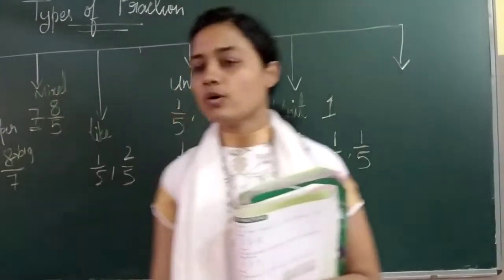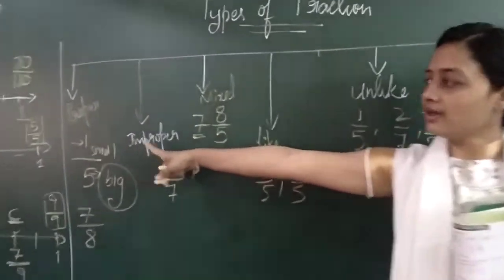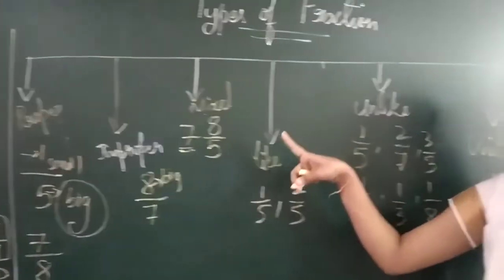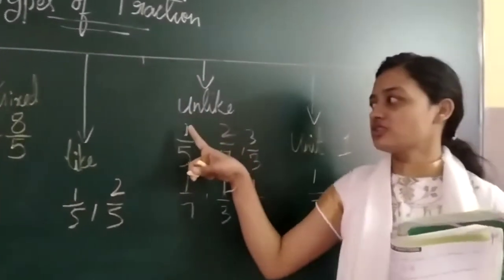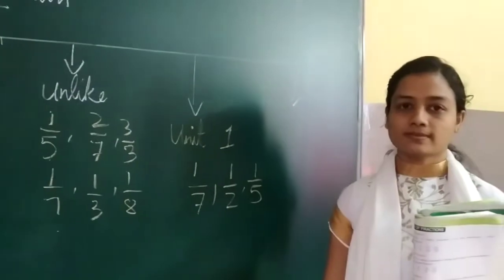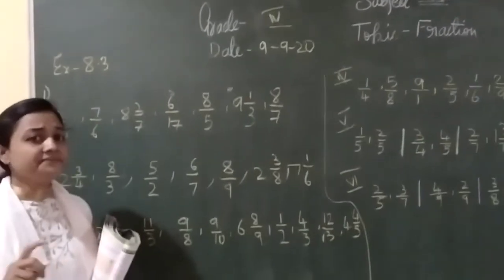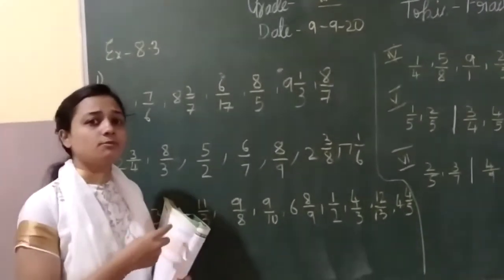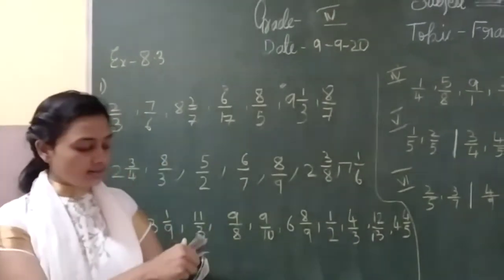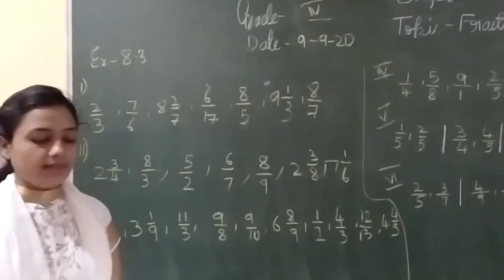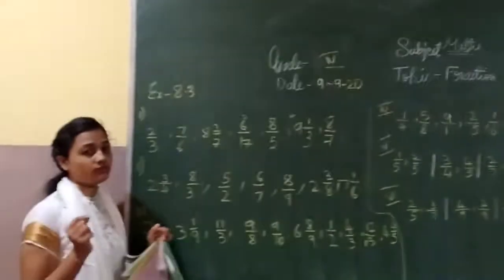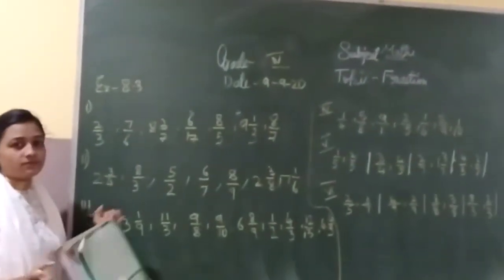So we have learned the different types of fractions: proper fraction, improper fraction, mixed fraction, like fraction, unlike fraction, and unit fraction. Based on these, we'll go and work some problems. That is exercise 8.3, page number 156. I'm going to do only a few problems; the others you will work out on your own.